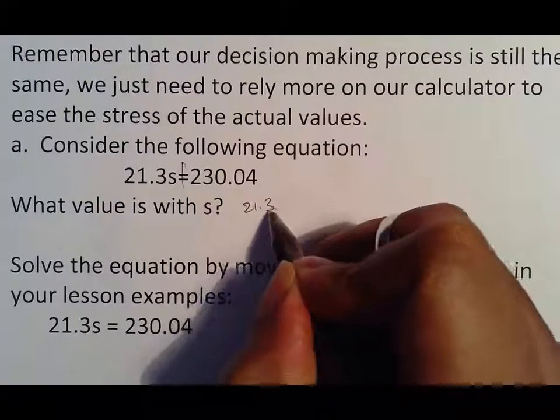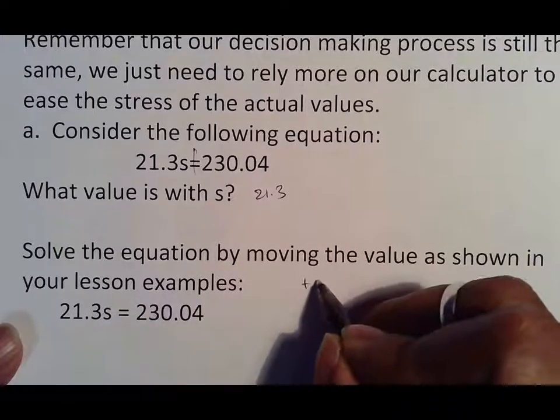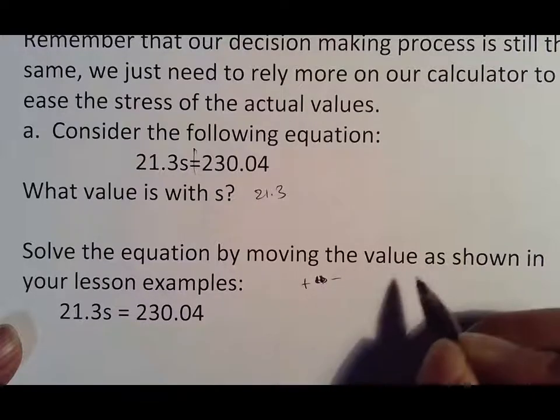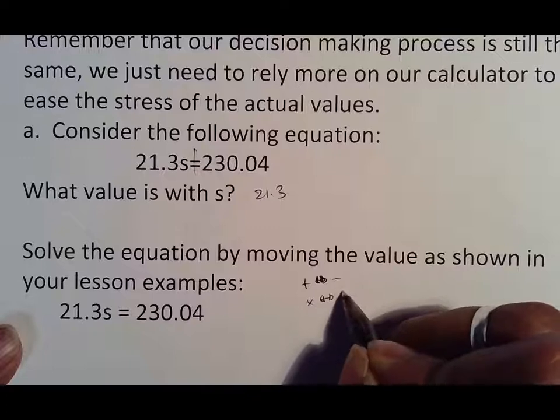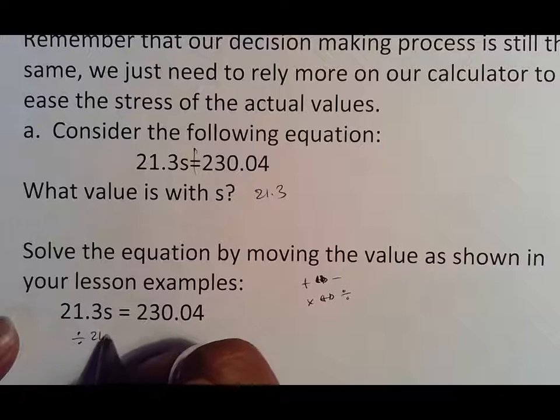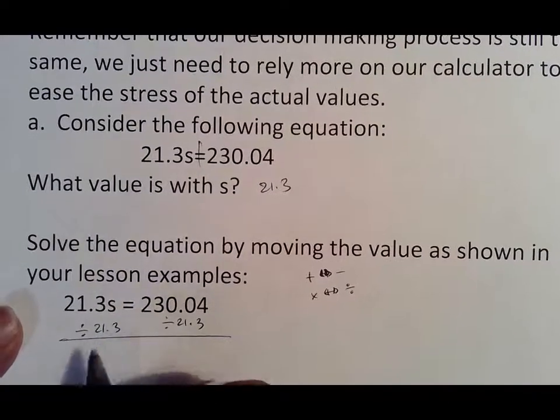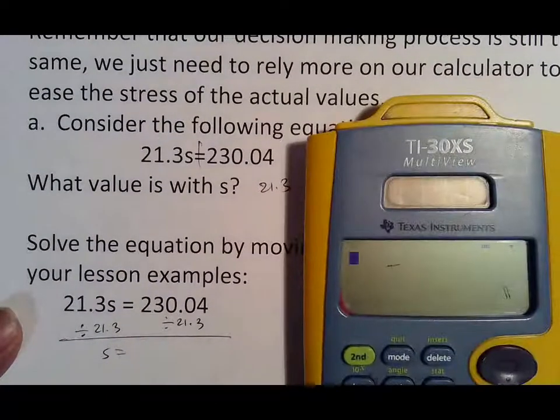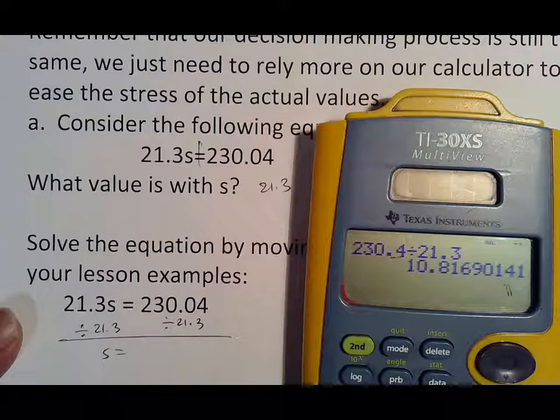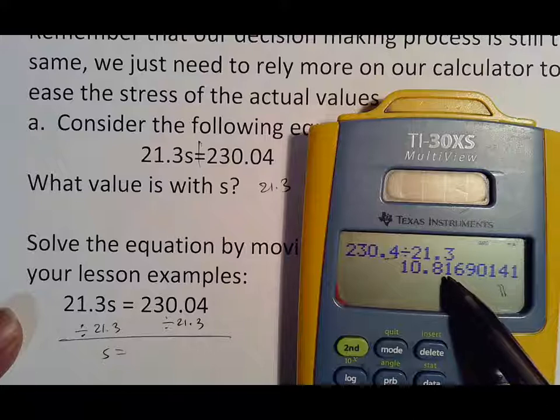What value is with S? In this case, 21.3. And so then they want you to move it. Remember, if this is being multiplied, the opposite of addition is subtraction, the opposite of subtraction is addition. The opposite of multiplication is division. And so if you want to get rid of multiplication, we divide by whatever is there. When that happens, the S comes down. I now just have to do 230.04 divided by 21.3.